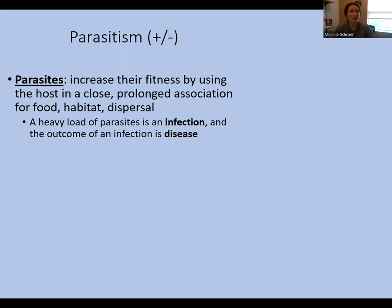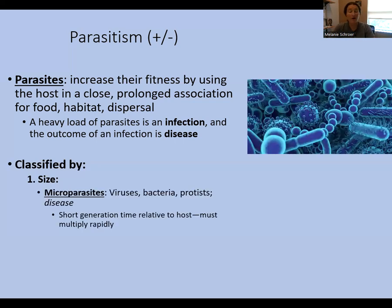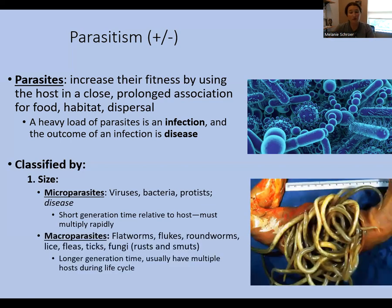Parasites can be classified in a couple of different ways. First, they can be classified by size. Microparasites are organisms such as bacteria, protists, and viruses — many diseases are caused by these tiny parasites. Relative to the host, these have a short generation time and reproduce over and over within a single host. Macroparasites are generally visible with the naked eye, have a longer lifespan, and many can utilize multiple hosts over their entire life cycle.